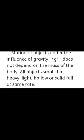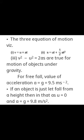Therefore, whatever the object — small, large, heavy, light — it will be pulled towards the earth at the same rate. Now the three equations of motion from chapter 1 are: v = u + at, s = ut + ½at², and v² - u² = 2as. These are also applicable for motion of an object under gravity — you just replace acceleration 'a' with gravitational acceleration g, whose value is 9.8 m/s².